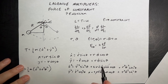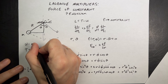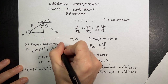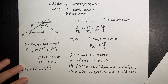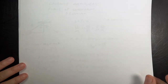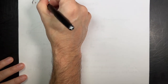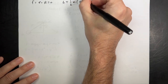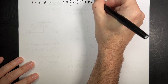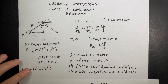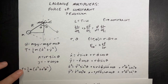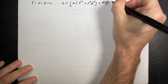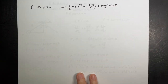Now I should write the potential energy U. It's just mgy, which equals m·g·(−r cos theta), since y = −r cos(theta). So L = ½m(ṙ² + r²θ̇²) − U = ½m(ṙ² + r²θ̇²) + mgr cos(theta), and the constraint is f = r − R = 0.